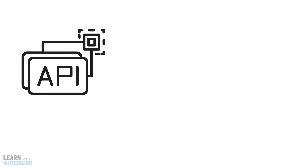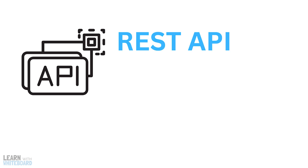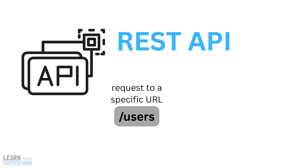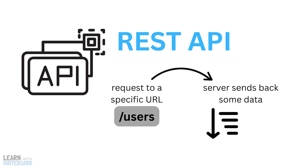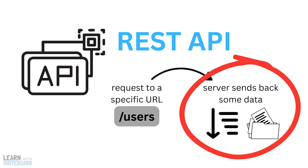Traditionally, most APIs on the Internet today use a system called REST API. Here you send a request to a specific URL, like slash users, and the server sends back some data in a fixed format, maybe with all the user info whether you need it or not. And this exactly is the problem with traditional REST APIs.